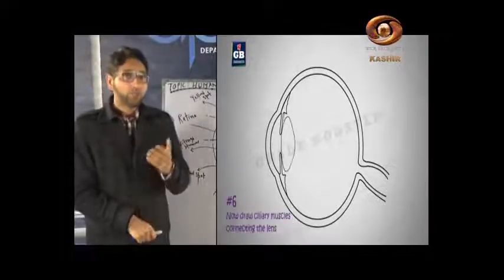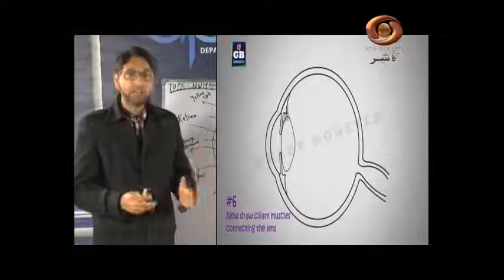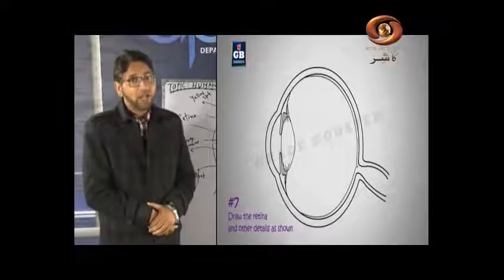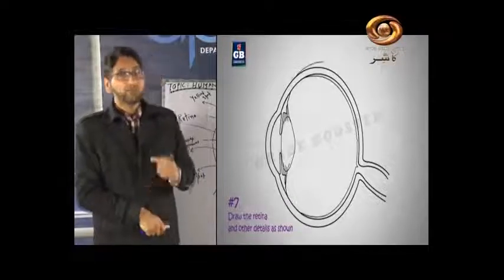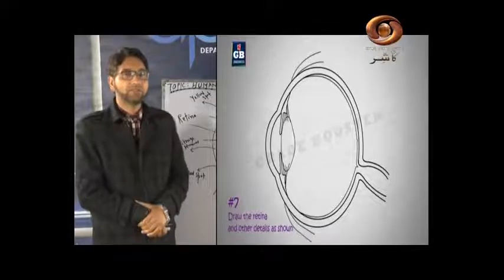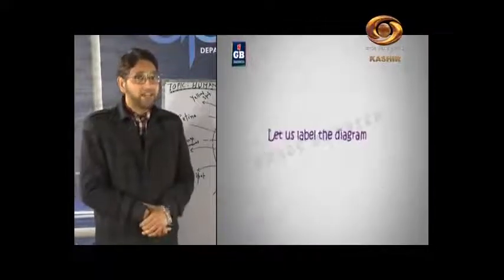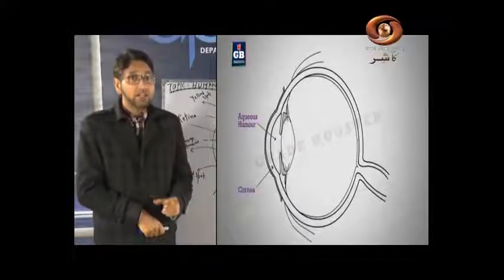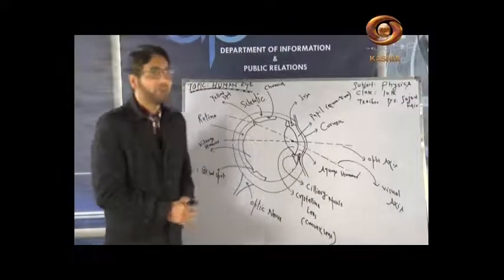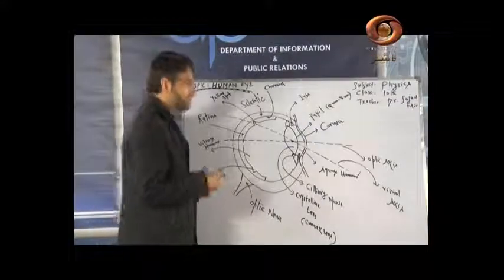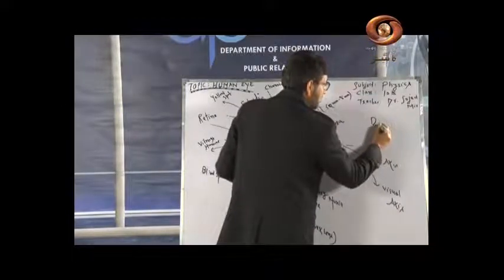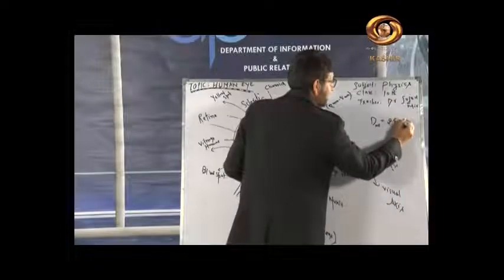Let me tell you a little about the eye — what it is and what things are in it. Children, remember: our eye has a spherical shape. It is a sphere with a diameter of around 2.5 centimeters.